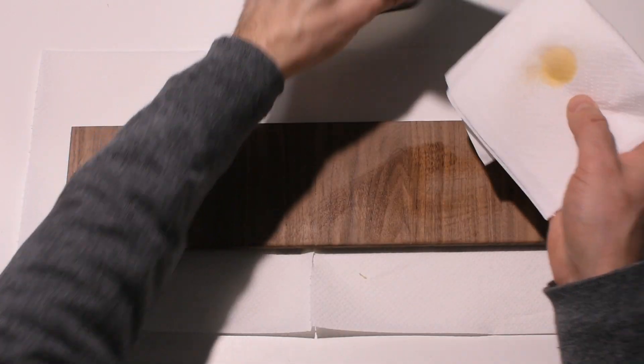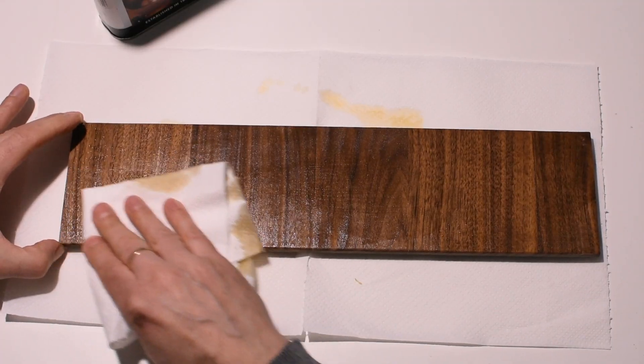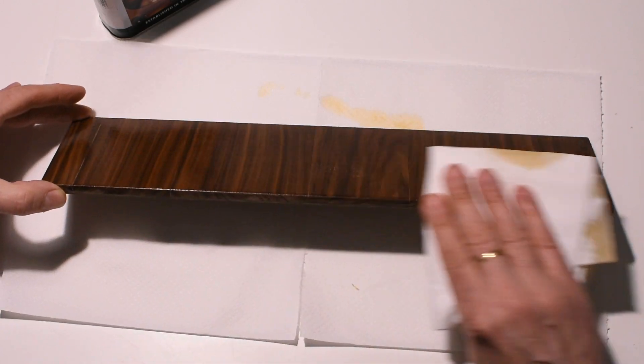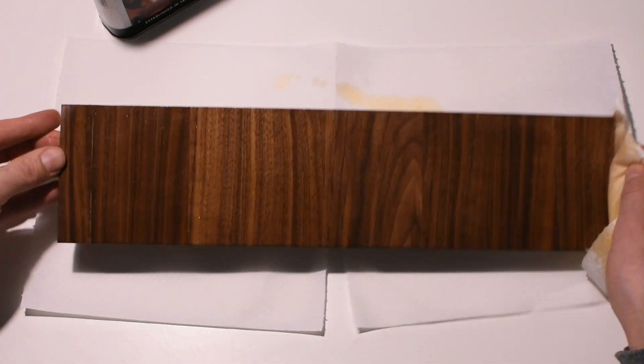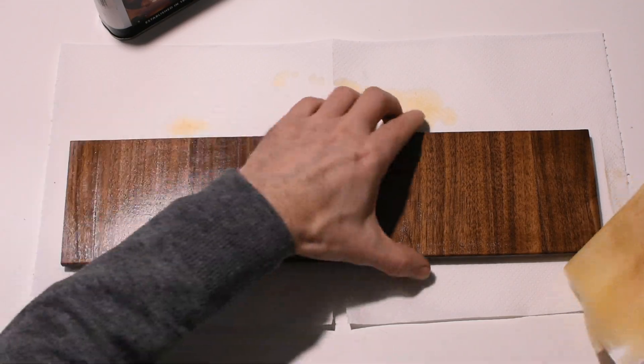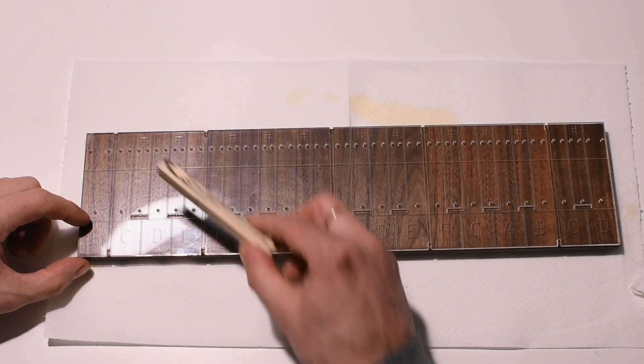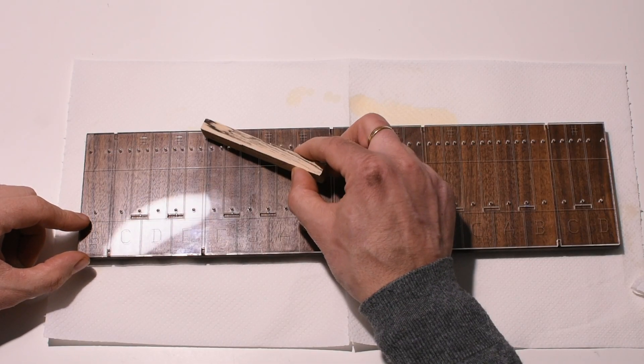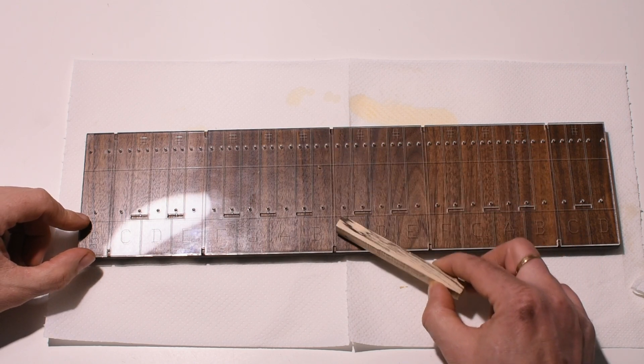The board is ready. I give it a coat of oil to see the veins and if there are any imperfections. I'm ready to make all the holes and cut the keys.